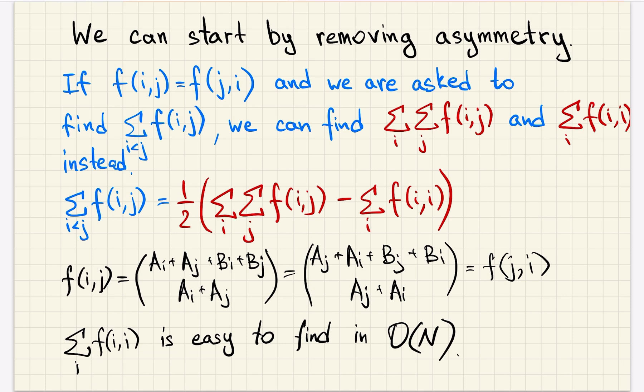We can start solving the problem by removing asymmetry. We are asked to calculate the sum of some function over i smaller than j, but our function is symmetric, so we are actually asked to calculate it for all unordered pairs, but let's just calculate it for all pairs and then understand how to change the answer.